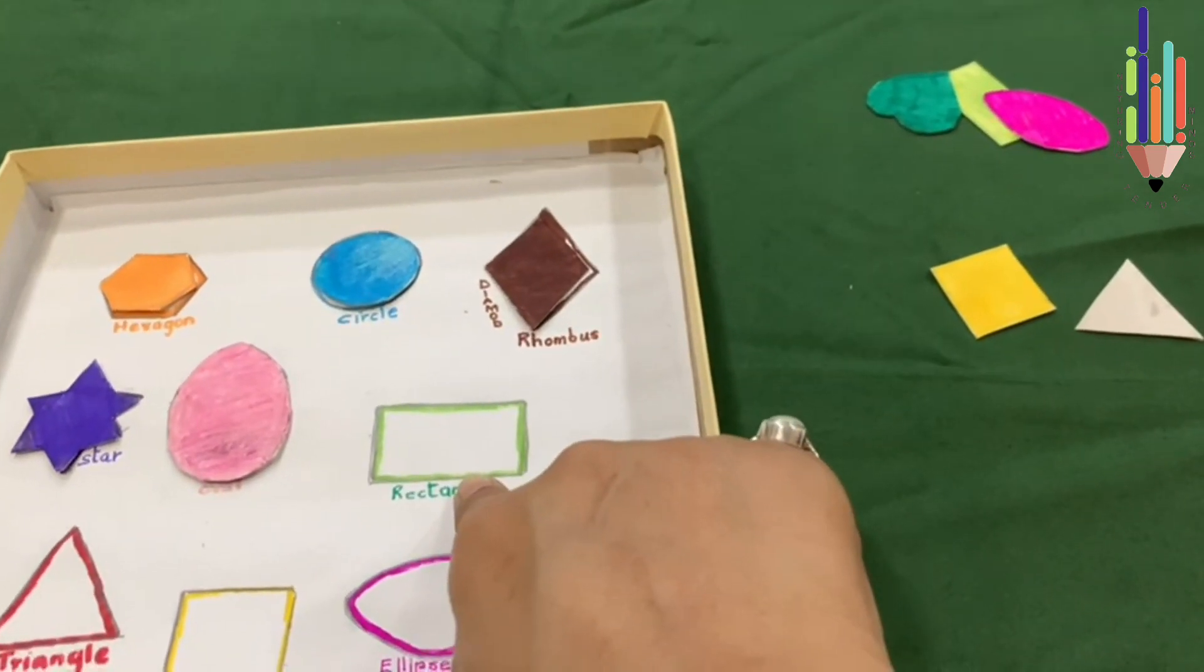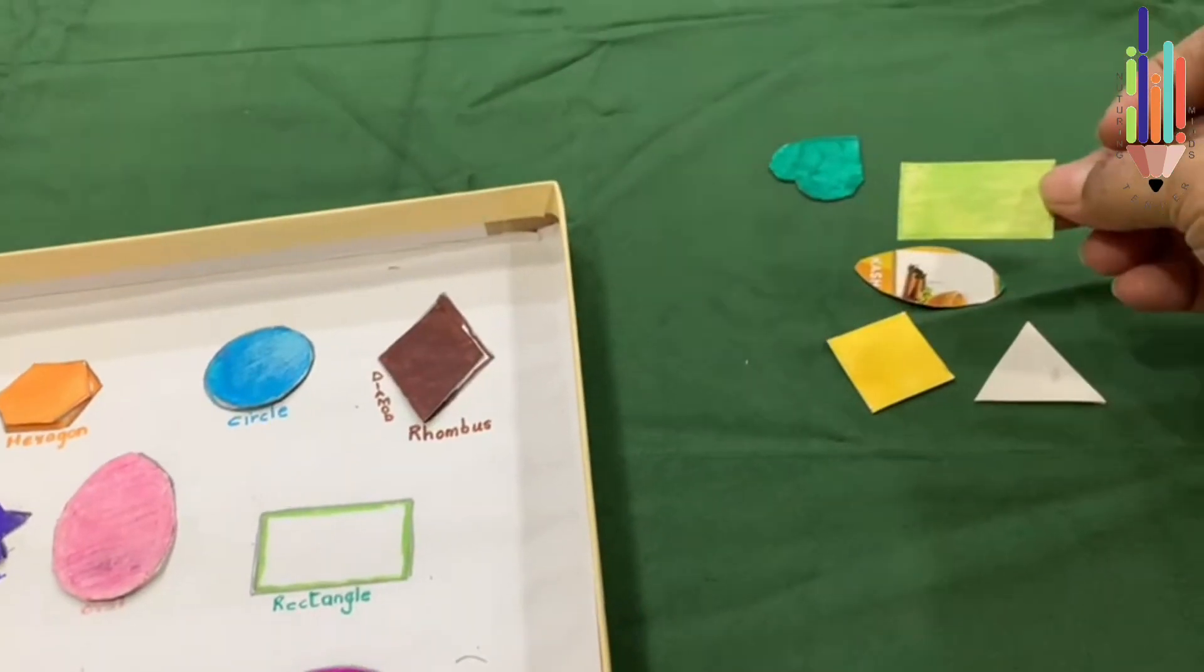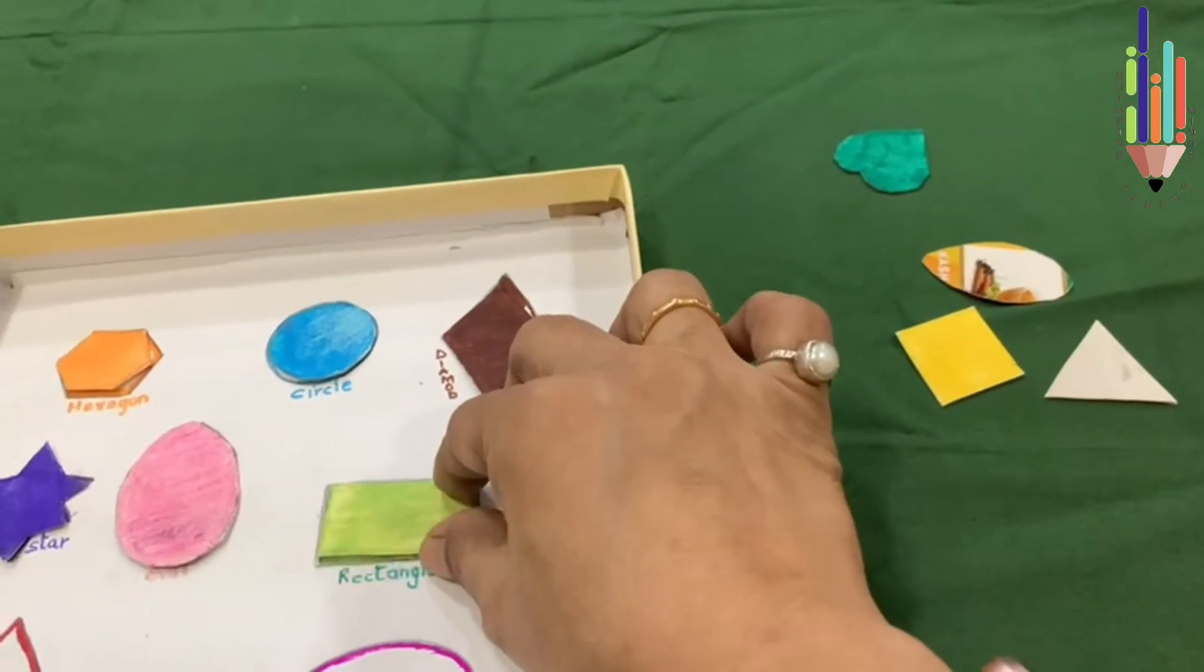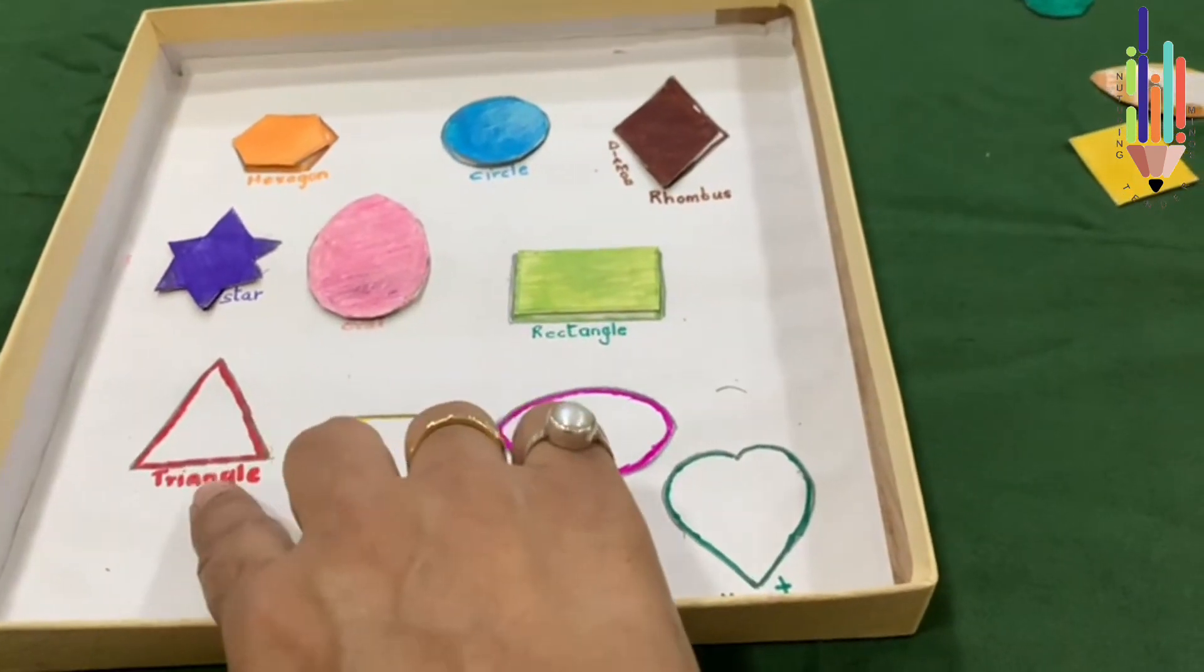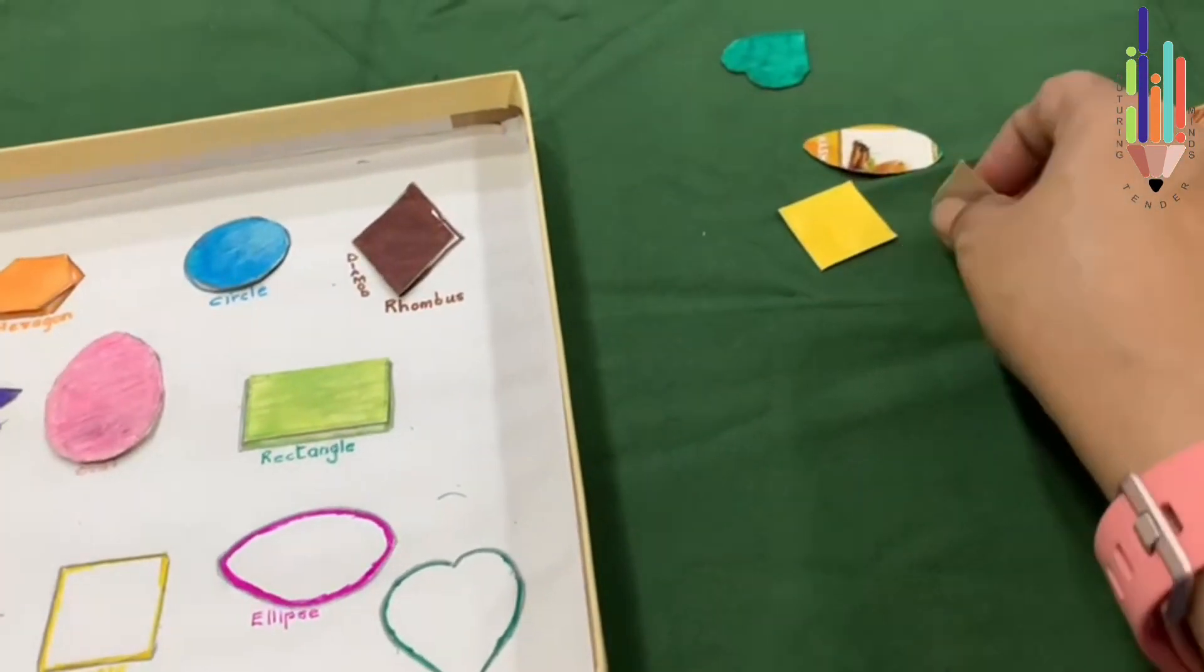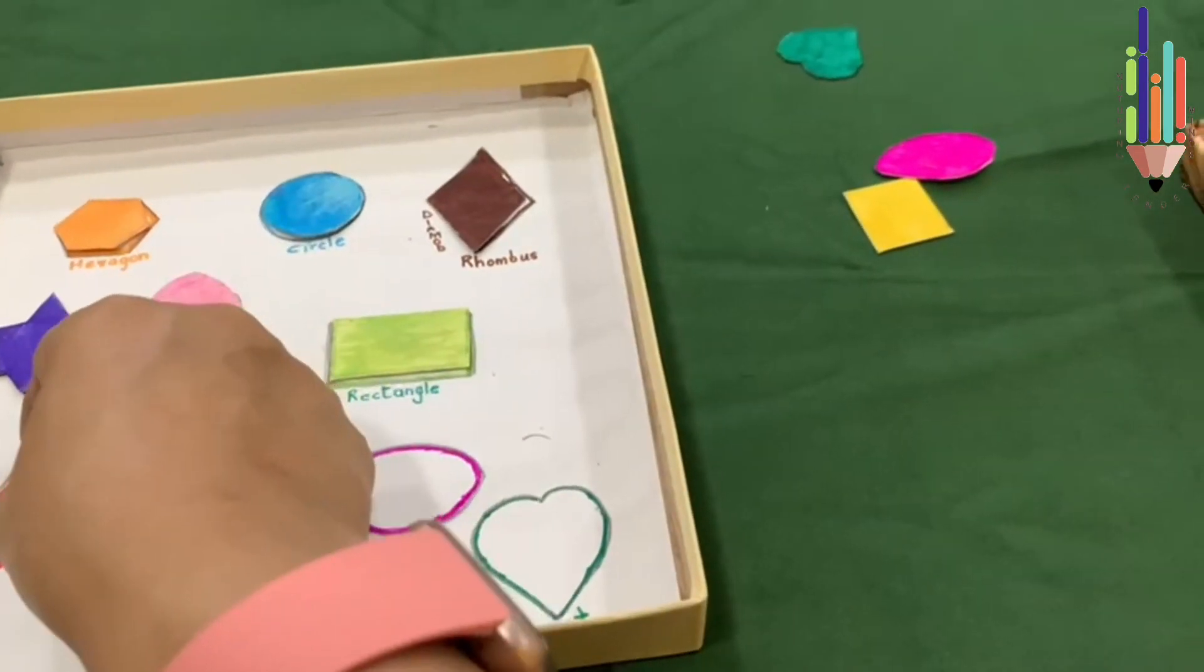Next is a rectangle which is green, so I have to search for the green color. So here is your rectangle. I place it here. Now I have got a triangle which is red, so I have to search here. Here is the triangle. I take the triangle and place it here.